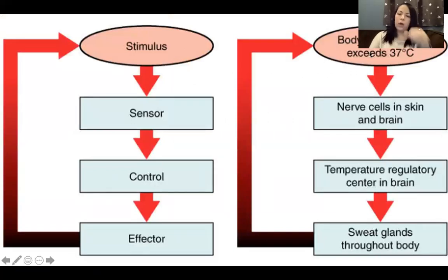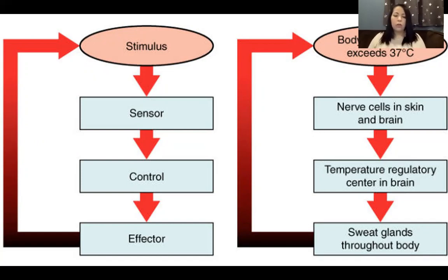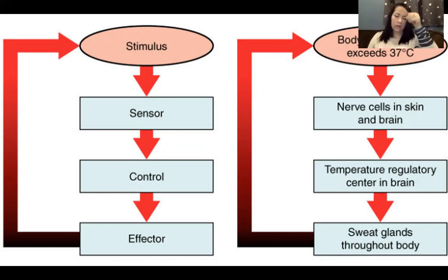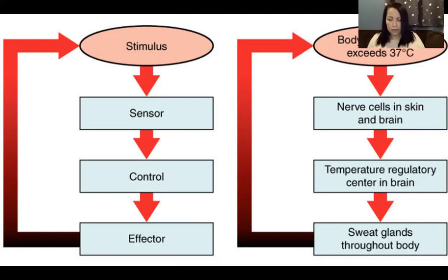Here's a diagram to show exactly what I'm describing. Starting with the stimulus on the left: the sensor detects that stimulus, the control center — the brain — receives that information from the sensor and sends commands to the effectors, so that the effectors can change the state of the environment, and then we go back around again as the sensors continue to detect the stimulus. It's a constant loop — that's a negative feedback loop.